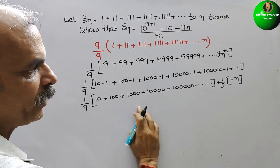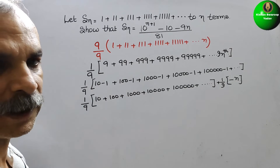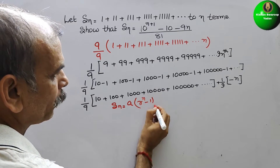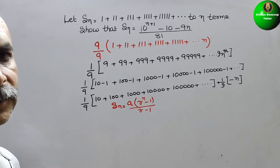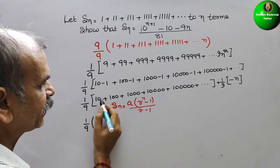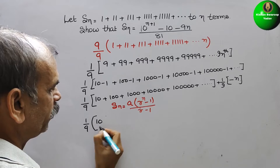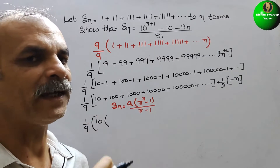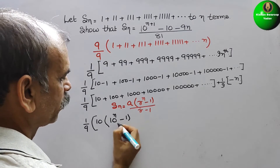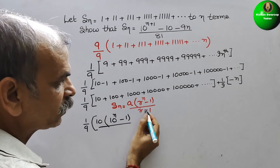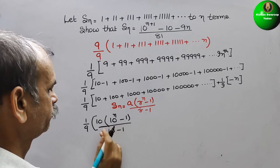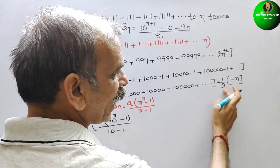The first part is a GP, so we use the sum formula Sn = a(r^n minus 1)/(r minus 1). Substituting: a is 10, r is 10 (since 100 divided by 10 is 10). This gives (1/9) times 10 times (10^n minus 1) divided by (10 minus 1), and we also carry the (1/9) times (minus n) term.